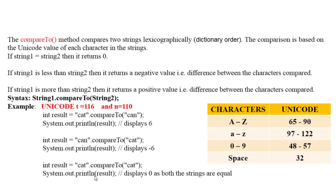The third possibility is when both strings are equal. For example, comparing 'cat' with 'cat': c equals c, a equals a, t equals t. Both strings are equal, so the function returns zero. Zero is stored in result and when you print result you get zero.